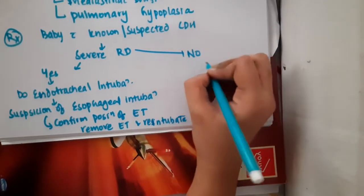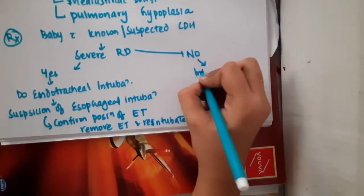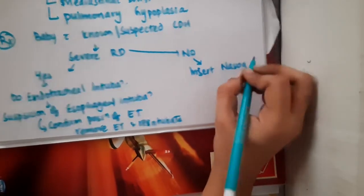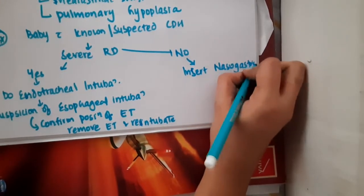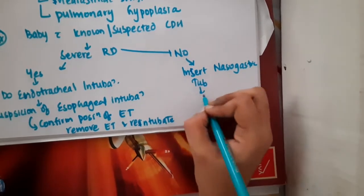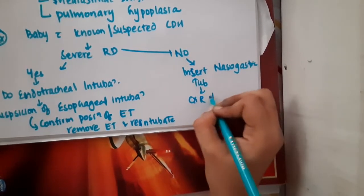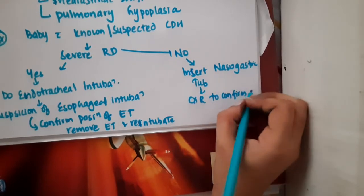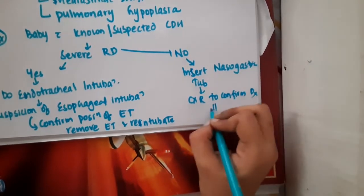If there is no severe respiratory distress, then insert a nasogastric tube, and chest X-ray should be done to confirm the diagnosis, then do the surgery.